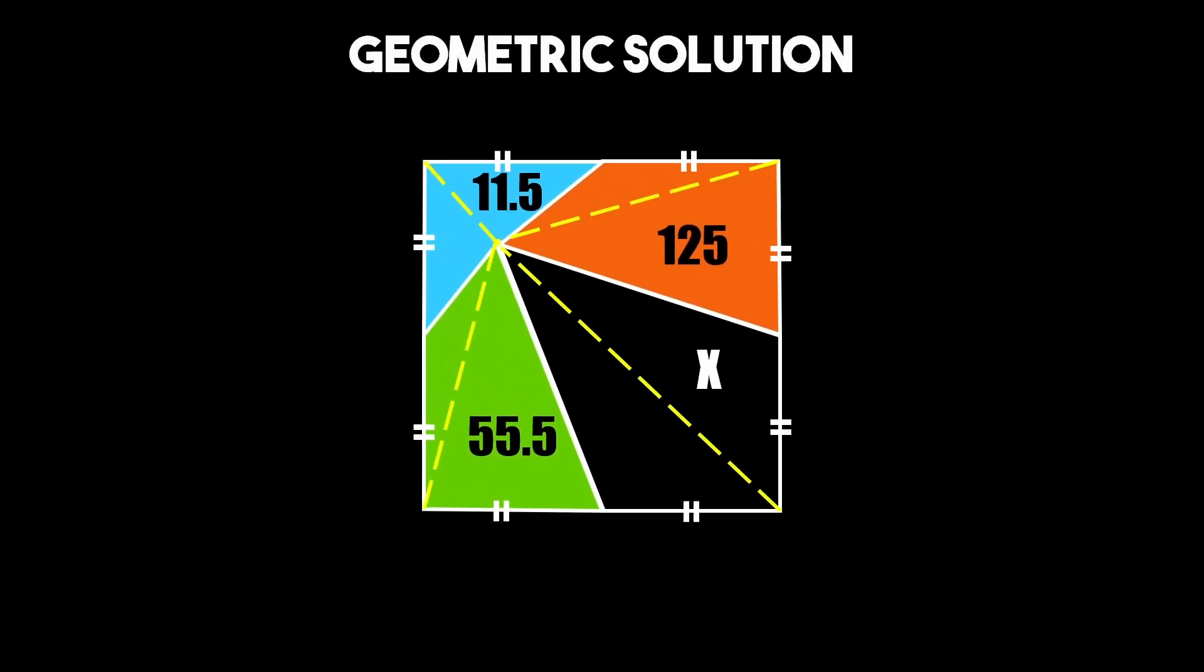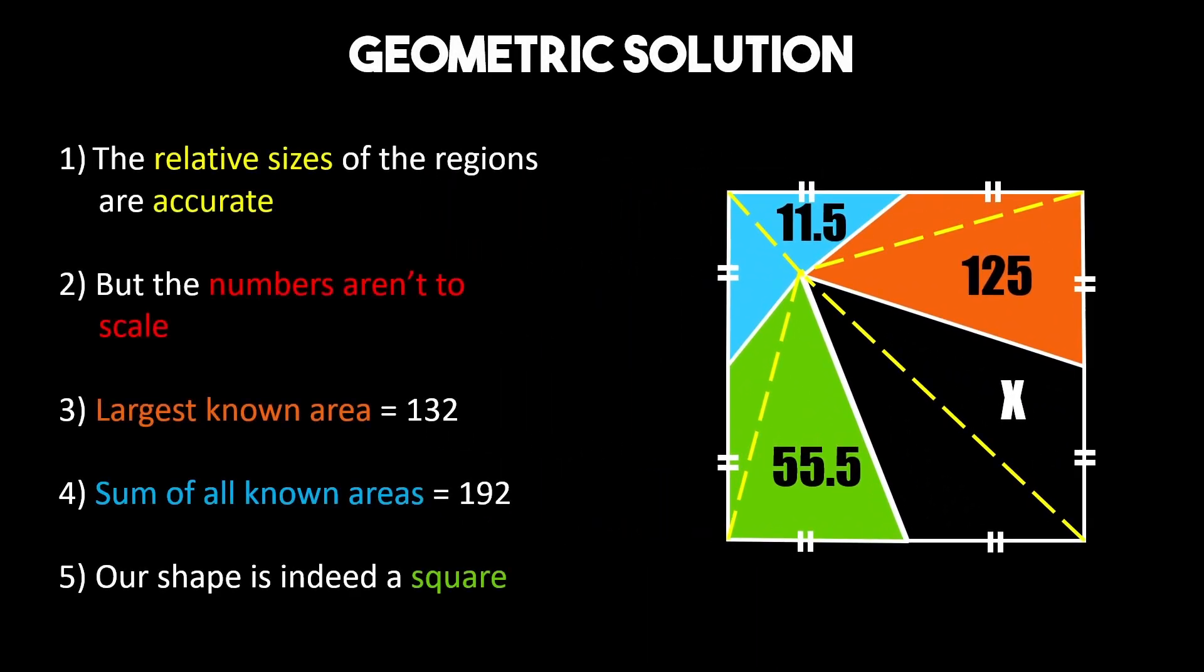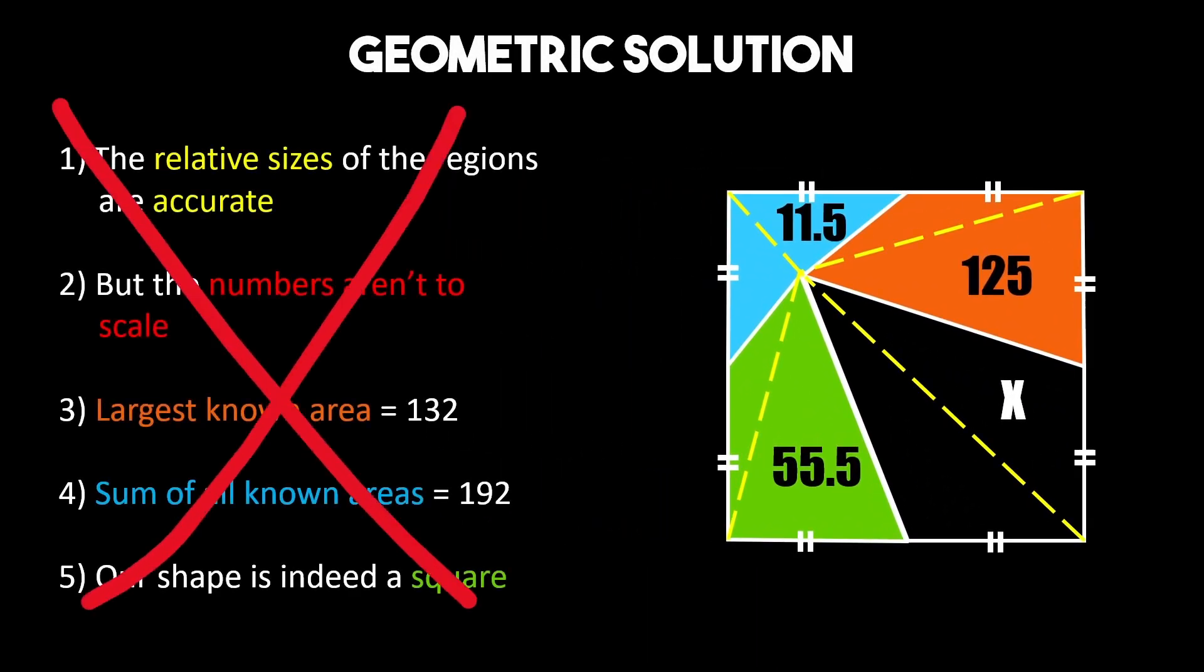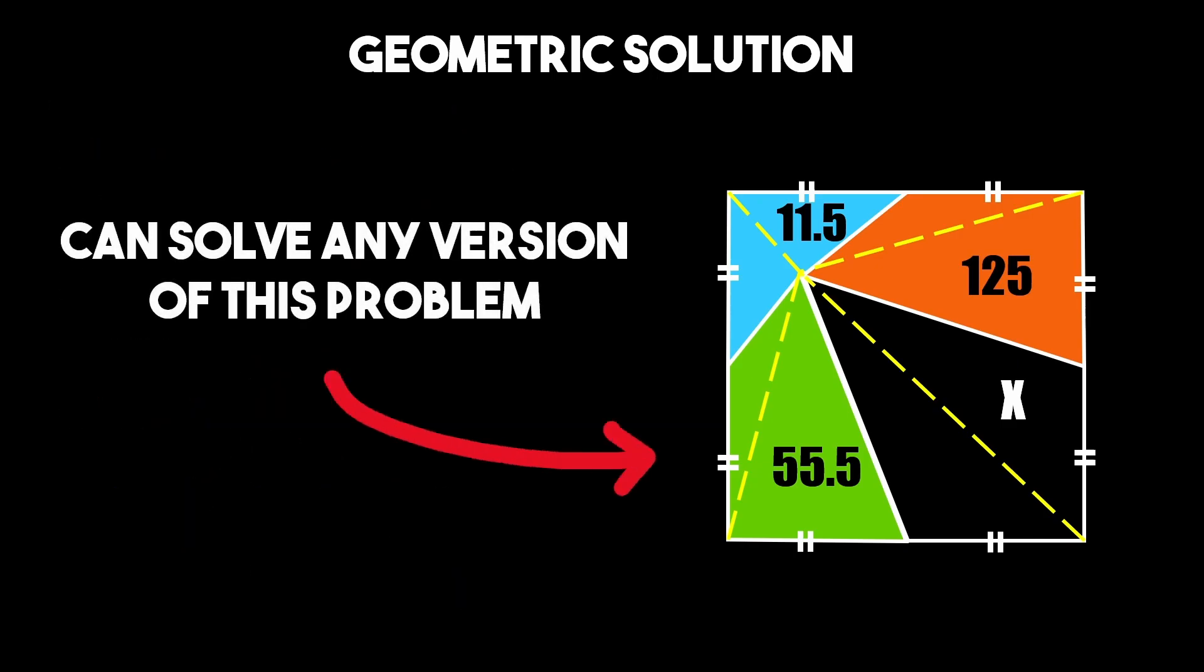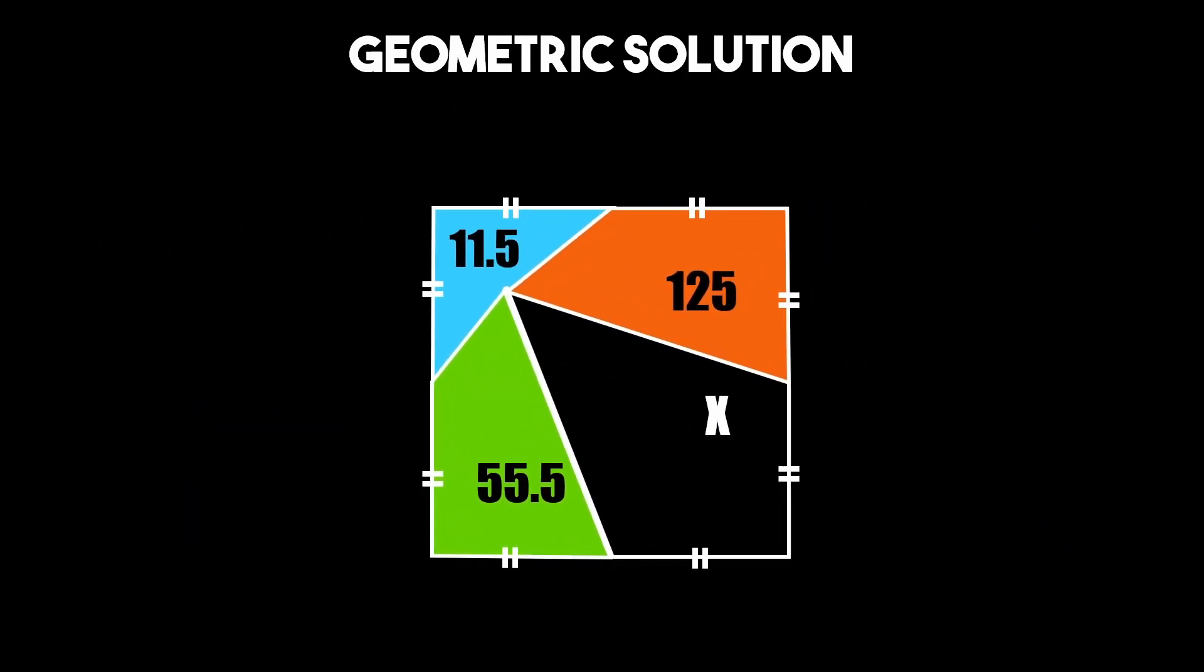But on to the geometric solution. Instead of our shape needing to meet a fairly specific set of criteria this method lets us find the missing area for any version of this problem. This is how it works.